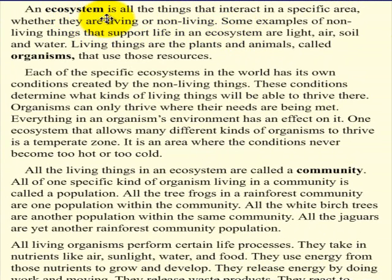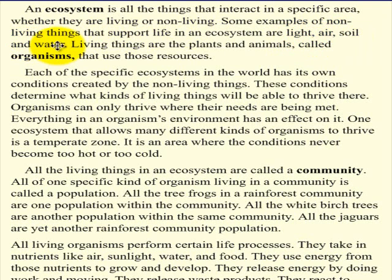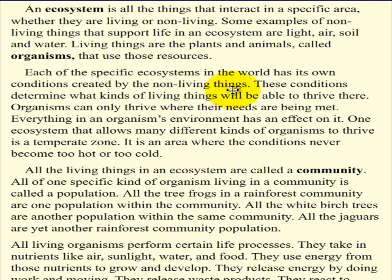An Ecosystem is all things that interact in a specific area, whether they are living or nonliving. Some examples of nonliving things that support life in an ecosystem are light, air, soil, and water. Living things are the plants and animals called organisms that use those resources. Each of these specific ecosystems in the world has its own conditions created by the nonliving things.